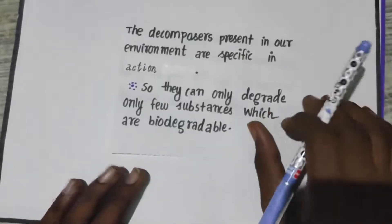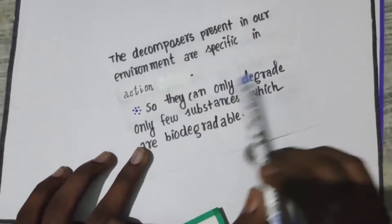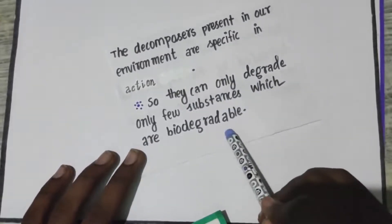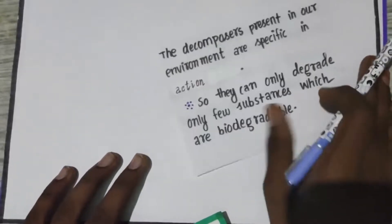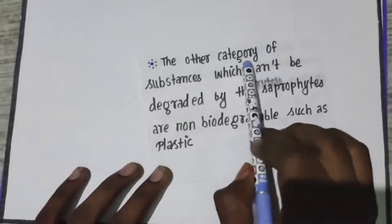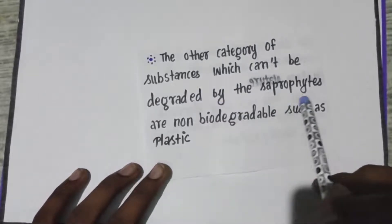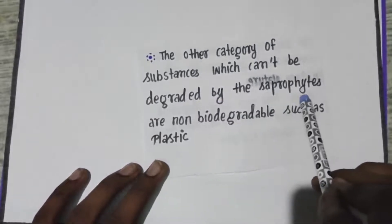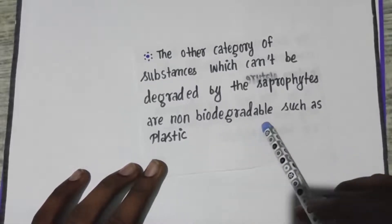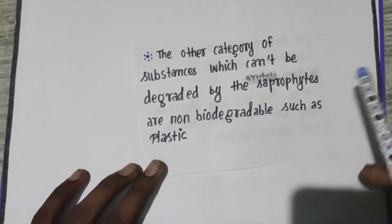So they cannot break down everything — they can only degrade a few substances, which are biodegradable. The other category of substances which cannot be degraded by the saprophytes — decomposers are also called saprophytes — are non-biodegradable, such as plastic, polythene, etc.